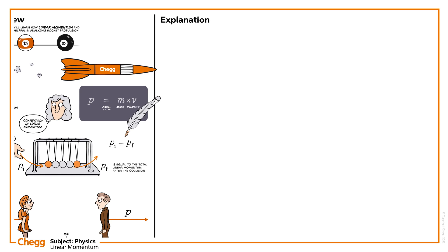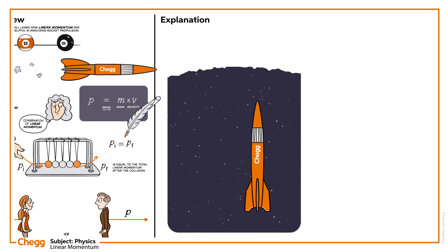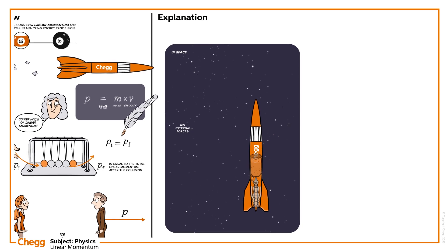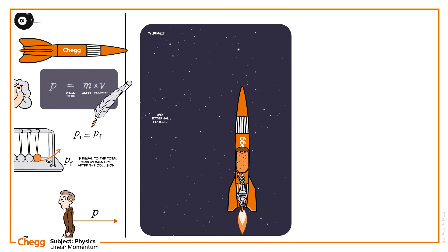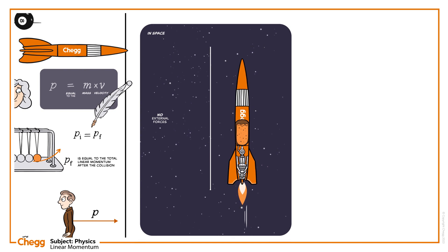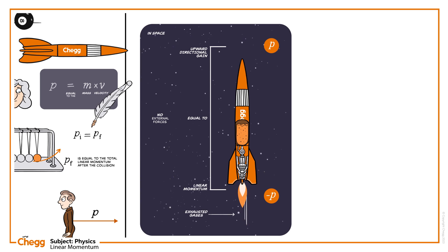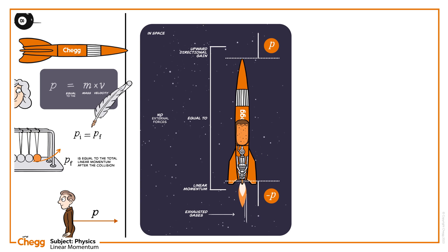Let's take another situation. We will now understand how a rocket gains momentum due to the recoil motion of the exhausted gases from it. Assume that a rocket is in space at rest, without any external forces on it. This has been showcased with the help of an illustration. When the gas is exhausted from the nozzle at the tail of the rocket, the rocket recoils in the upward direction with a gain in linear momentum equal to the linear momentum of the exhausted gases, due to the conservation of linear momentum.